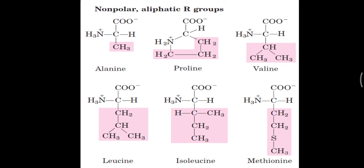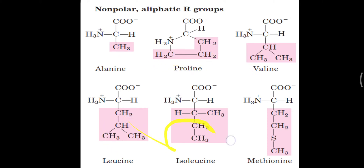In the structures, alanine has a CH3 group, proline has a particular hydrocarbon group, and valine, leucine, isoleucine, and methionine all mostly contain hydrocarbon chains which will not be solubilized in water but will be solubilized in lipid solvents.